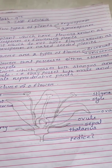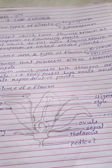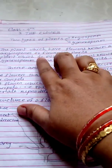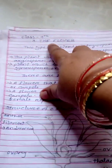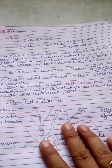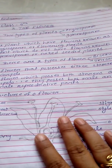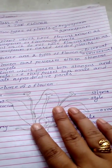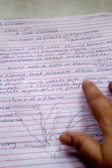Good morning students. Today we will read the third chapter of ninth class, that is the flower. We know that in this world there are two types of plants: one is angiosperm and another one is gymnosperm.